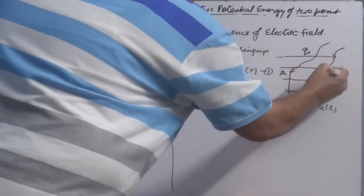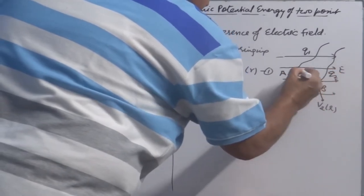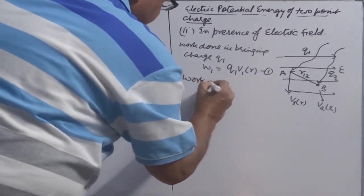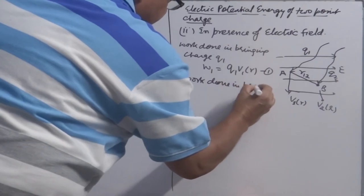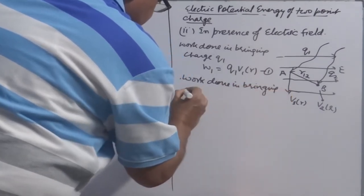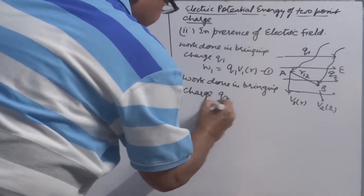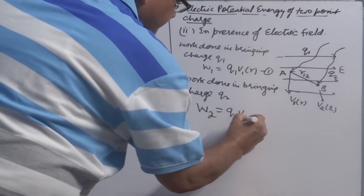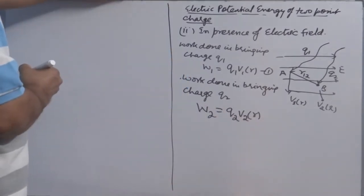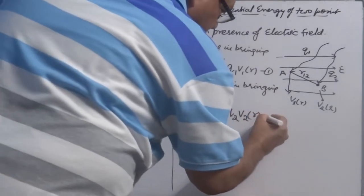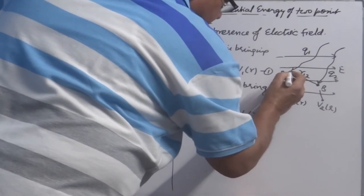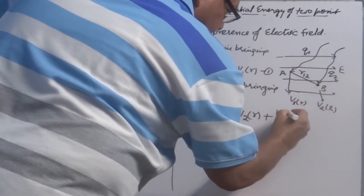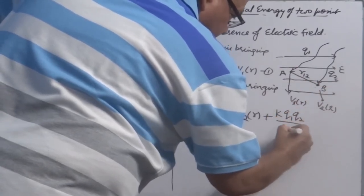Now, I brought another charge Q2 and kept at point B. Distance between these two points is R12. Work done in bringing charge Q2, W2 is equal to Q2 V2R. Plus, by this time already Q1 is placed at A, so it will have its own potential. So charge Q2 has also worked against potential due to charge Q1. That is K Q1 Q2 over R12.